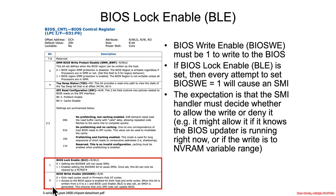The processor will transition to system management mode, and that code will have an opportunity to decide whether to allow the BIOS write enable to stay 1 or to reset it. The idea is that system management code can decide whether to allow it — for instance, if it knows a firmware update is in progress, or if the operating system is writing into non-volatile memory such as NVRAM variables.